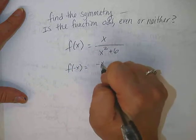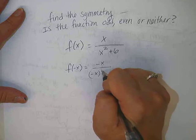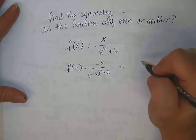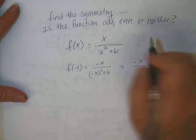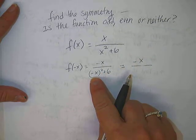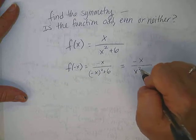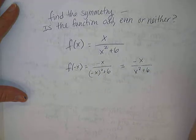We're going to plug in a negative x. Oh, now I know what the answer is. What happens to that negative down here? It turns positive. So, x squared plus 6.